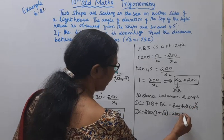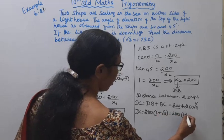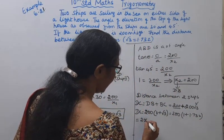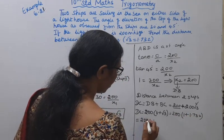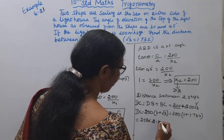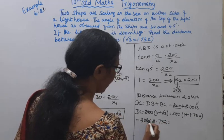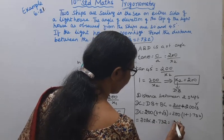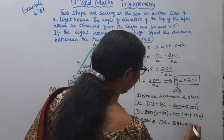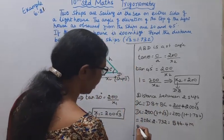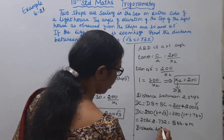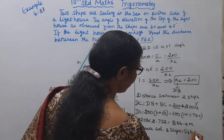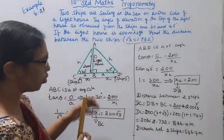The total distance CD equals 200 into (1 plus root 3), which is 200 into (1 plus 1.732) equals 200 into 2.732, giving 546.4 meters. The distance between the two ships is 546.4 meters.